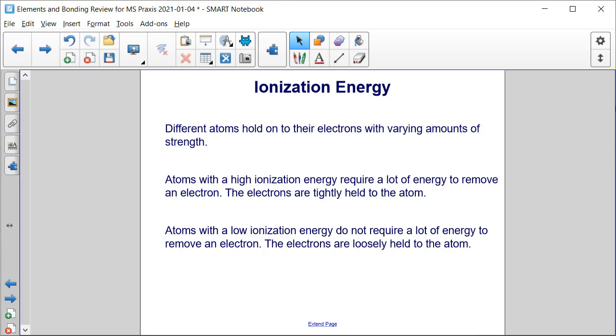Atoms with high ionization energy require a lot of energy to remove an electron because their electrons are tightly held to the atom. Atoms with low ionization energy do not require a lot of energy to remove an electron, because those electrons are more loosely held to the atom.